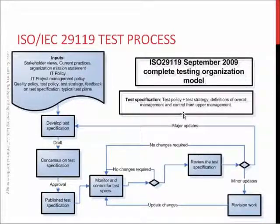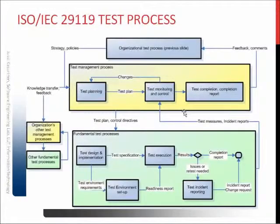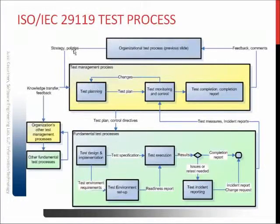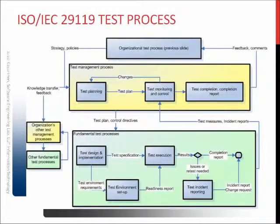When the test policy and strategy exist, they are applied at the organizational level. The upper-level organizational test process — represented by the blue box at the top of the screen — feeds into the test management level. The strategies and policies are applied in the test management level, shown in the yellow box, and the green box here, both representing activities at the project level.